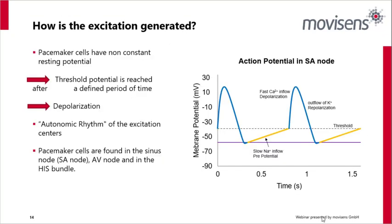How is excitation generated in the heart? Cardiac cells have a stable resting potential, so nothing would happen on its own without some form of excitation. That's where pacemaker cells come in — they have a non-constant resting potential. As soon as the resting potential is reached, the voltage drifts back to the excitation threshold and triggers the excitation of the pacemaker cell by itself. This property is called auto-rhythmia, and such cells enable the regular contraction of the heart — the actual heartbeat.